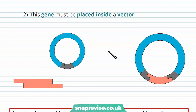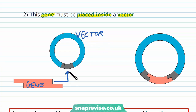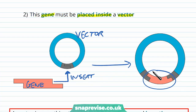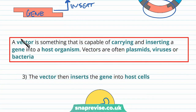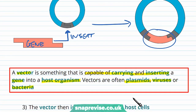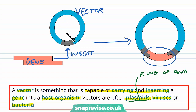Next we need to think about how we get the gene into the second organism. The gene has to be placed inside something called a vector, and the vector carries the gene. We insert the gene into the vector, so the vector now contains the gene and holds it within its own genetic material. A vector is something that's capable of carrying and inserting a gene into the host organism. Vectors are often plasmids, viruses, or bacteria. A plasmid is a ring of DNA found in bacteria, and all we do is insert the gene into two points of that plasmid to make it contain that DNA.